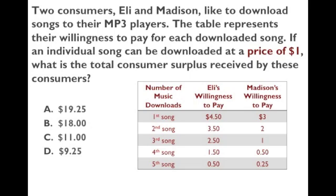To calculate the surplus, you calculate Eli's first four songs: $4.50 minus $1 is $3.50; $3.50 minus $1 is $2.50; $2.50 minus $1 is $1.50; $1.50 minus $1 is $0.50. Then add Madison's surplus: $3 minus $1 is $2 on the first song, and $2 minus $1 is $1 on the second. Adding all those surpluses together, the answer is $11, which is C.